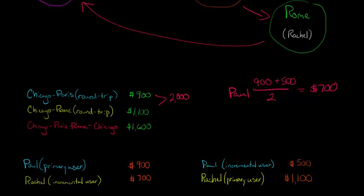And now we're going to do Rachel. So if Rachel is the incremental user, it's 700. So Rachel is going to be 700 plus, and then she's 1,100 if she's the primary user, plus 1,100 over 2. So that adds up in the numerator.